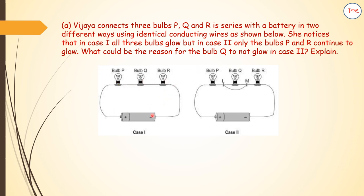Here is the diagram. The positive terminal of the battery is connected to bulb P and negative terminal is connected to bulb R. Whereas in case 2, again P, Q, R are in series. Positive terminal is connected to bulb P, negative terminal is connected to bulb R. But in case 2, between points L and M, you can see a simple wire is connected.